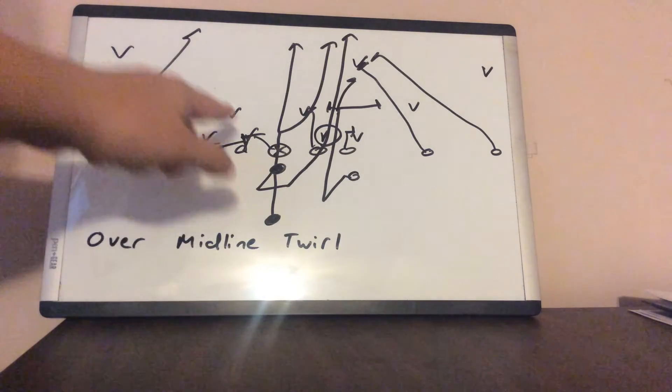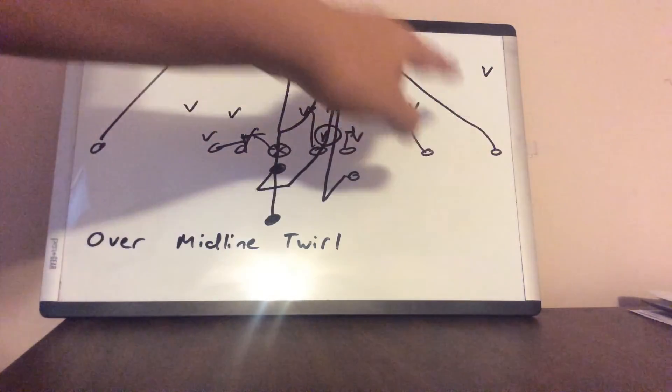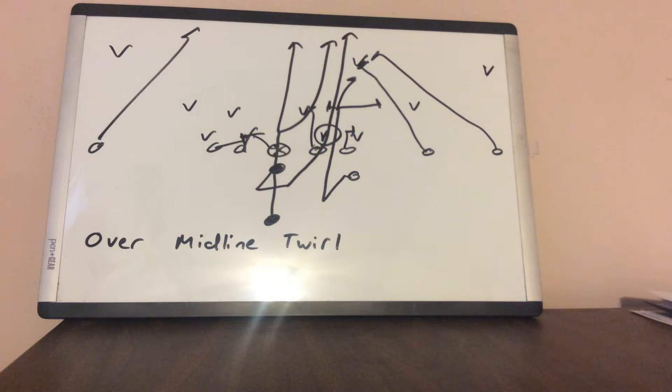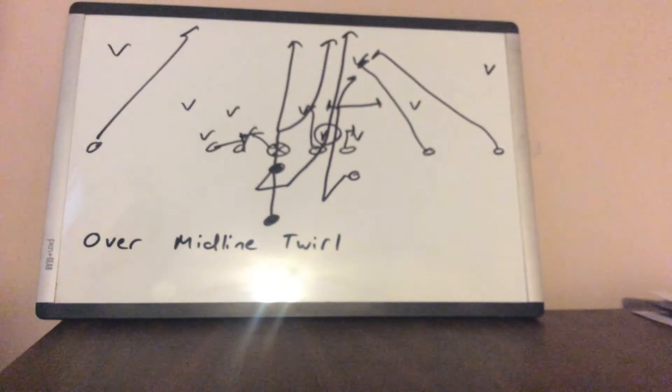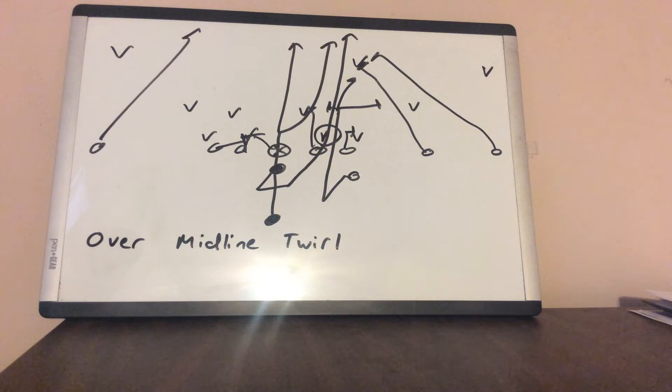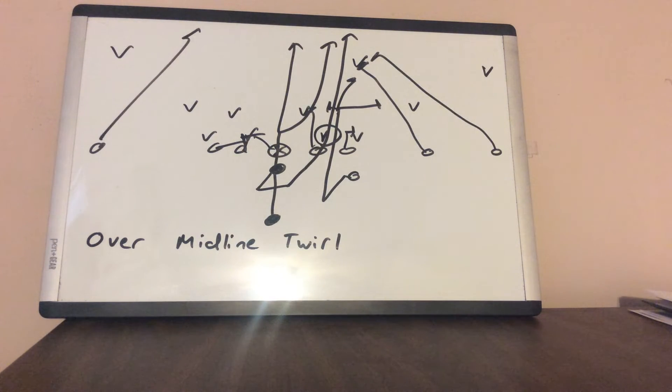The tackle will sprint his belly button to the hip of the guard, thereby canceling the backside B gap. The receiver is going to crack the safety because there's no need to block the corner because it's an A to B gap run. And the over receiver will do the same thing. So you could end up with two people on the safety. Backside receiver cuts off the corner.